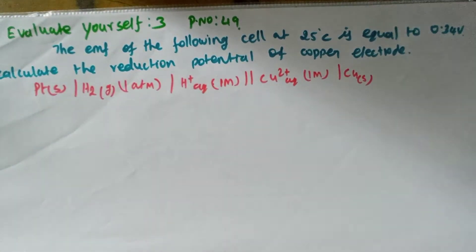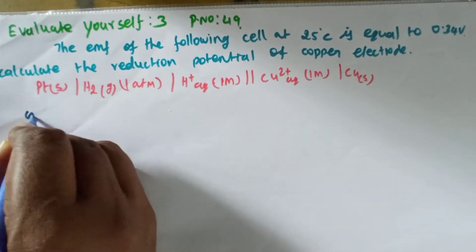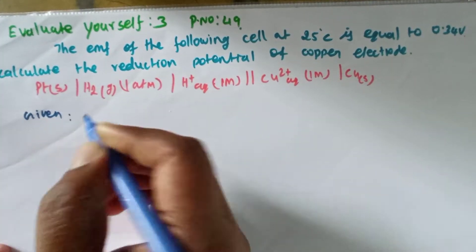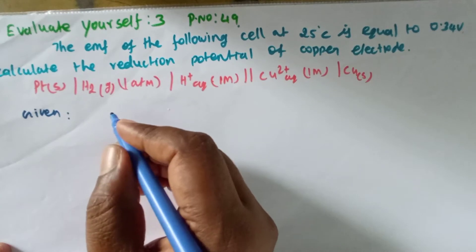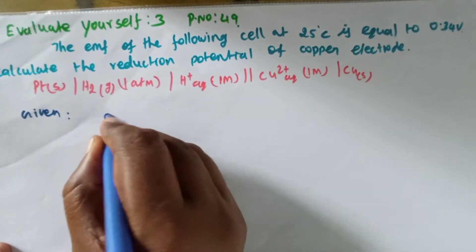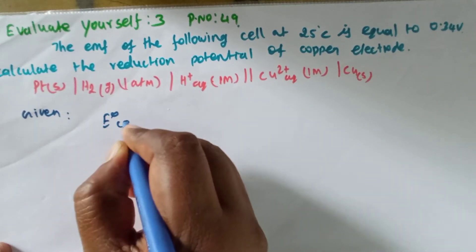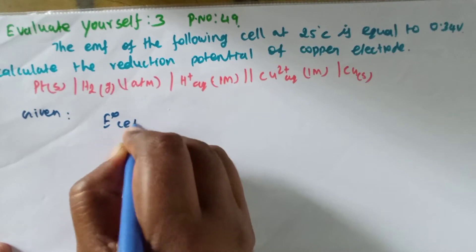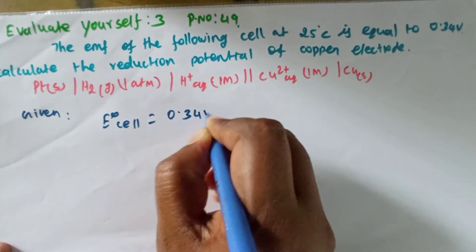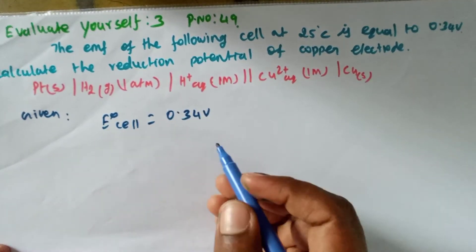First we will write the given values. Given: E_cell is equal to 0.34 volt.